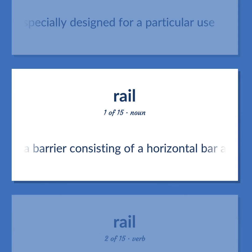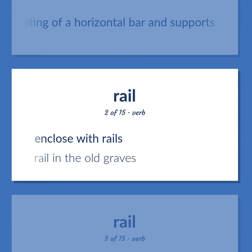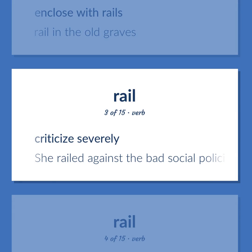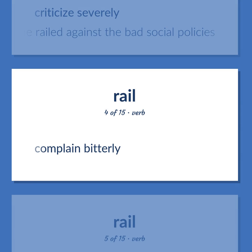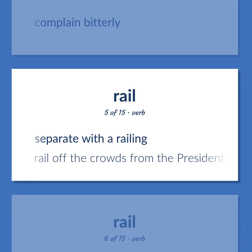Rail: A barrier consisting of a horizontal bar and supports. Enclose with rails — rail in the old graves. Criticize severely — she railed against the bad social policies. Complain bitterly. Separate with a railing — rail off the crowds from the presidential palace.